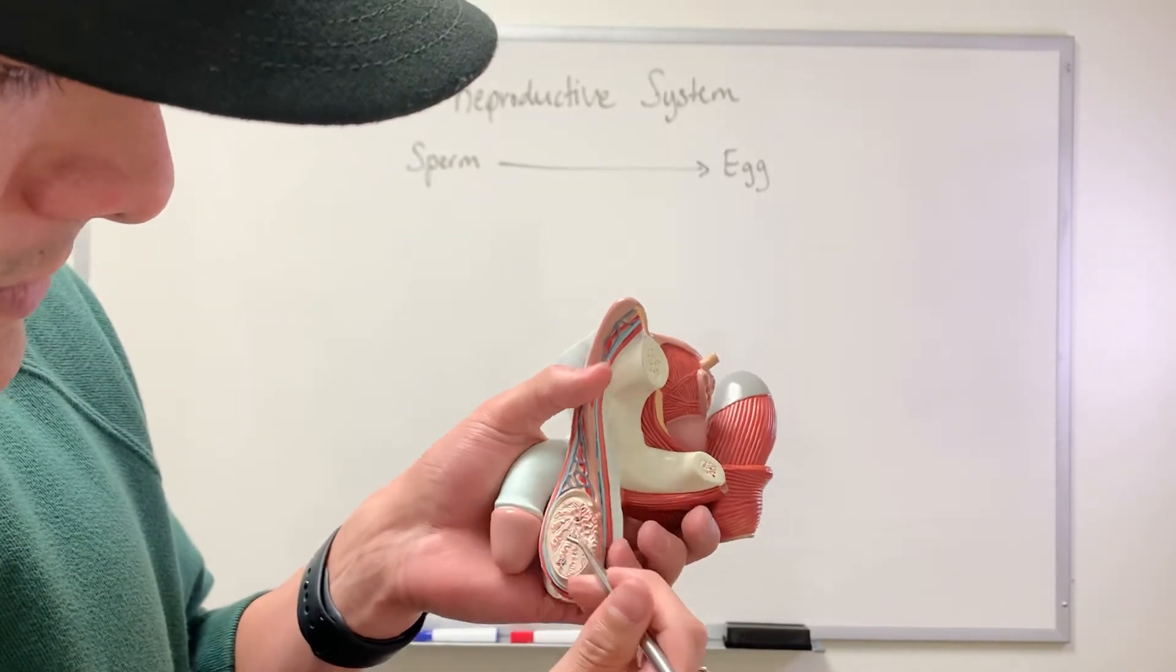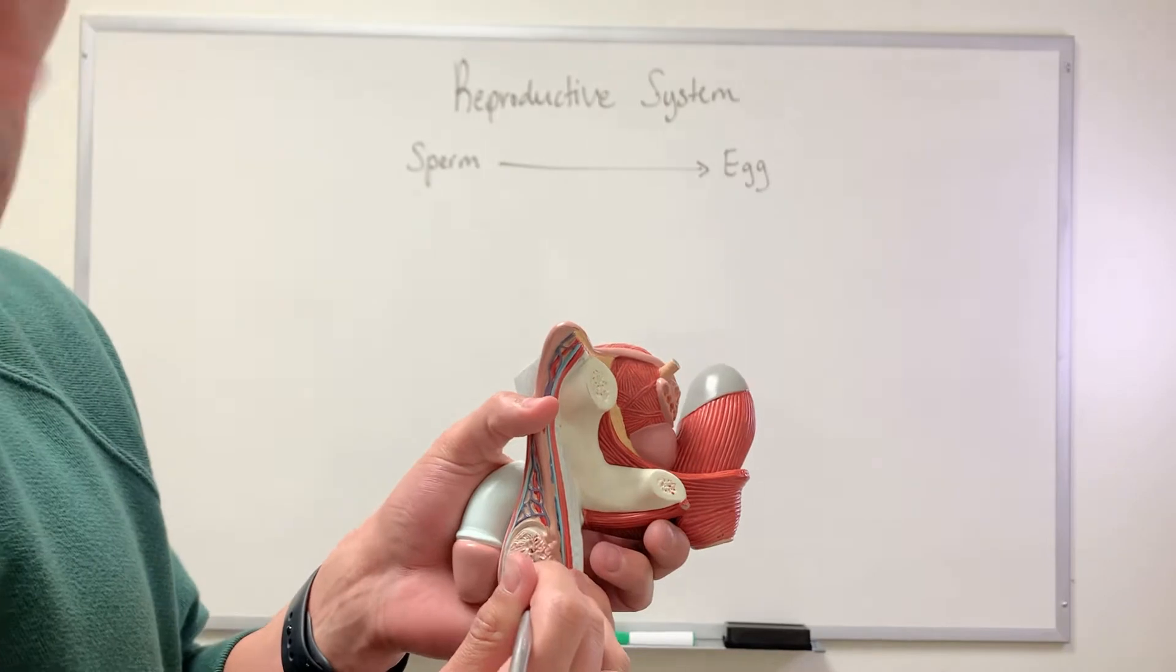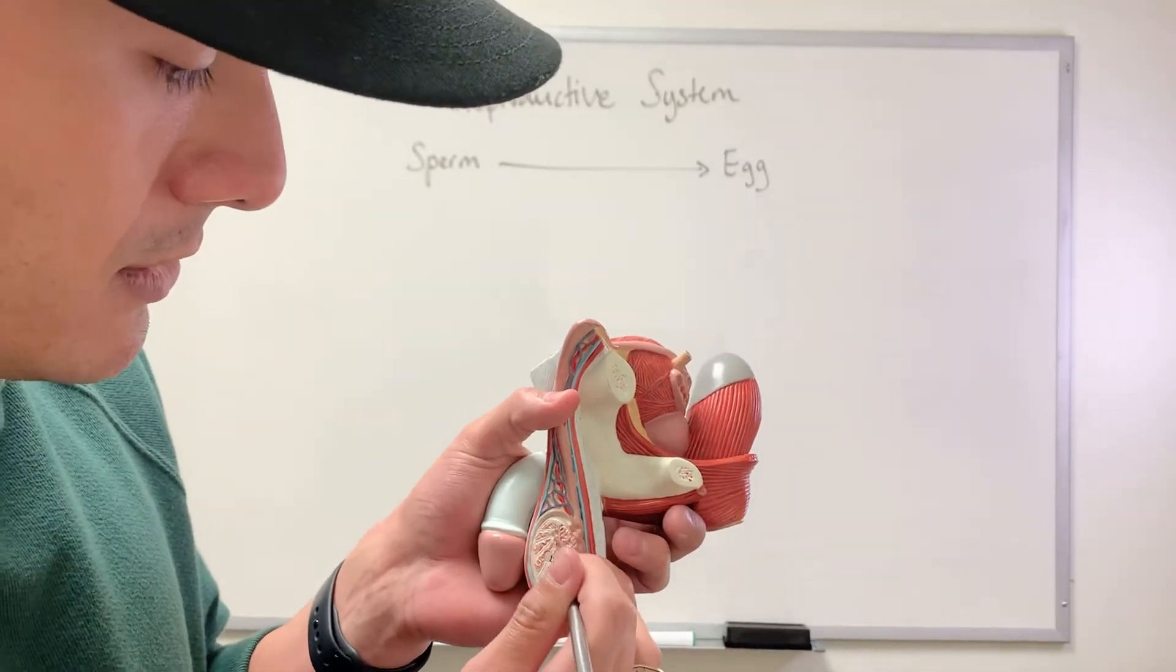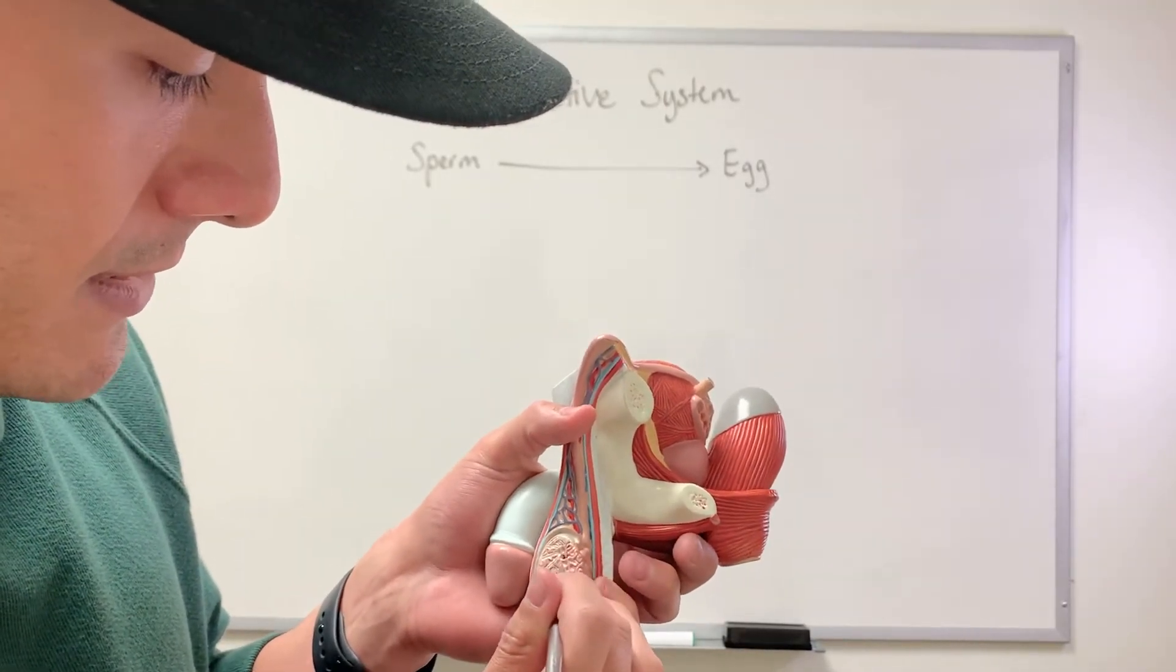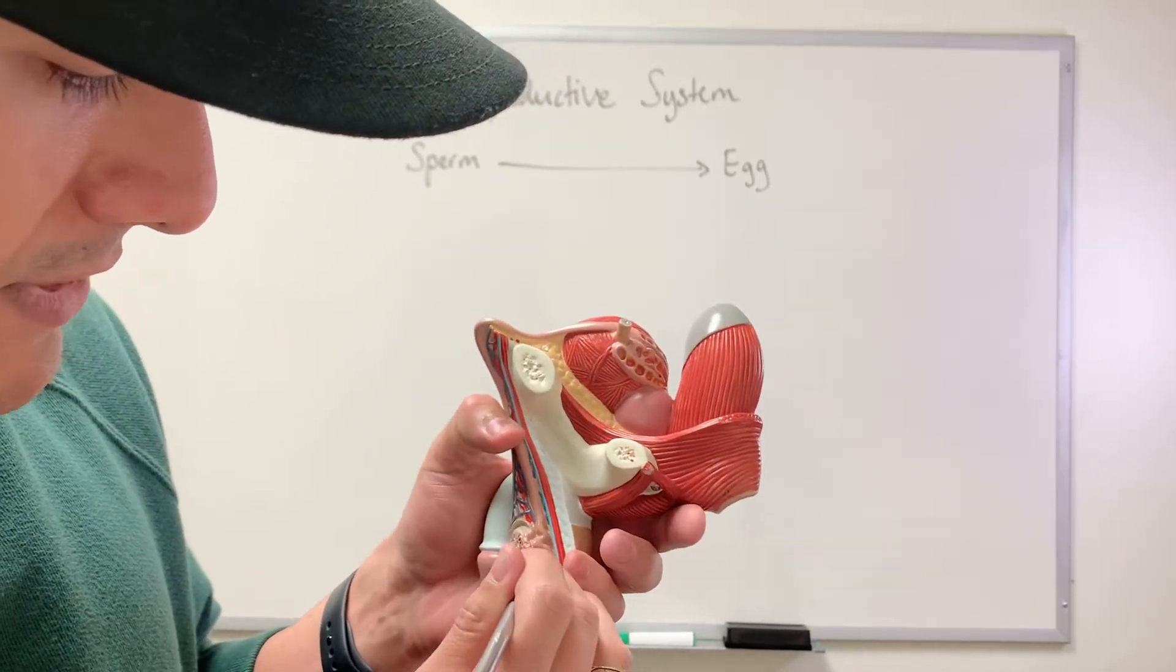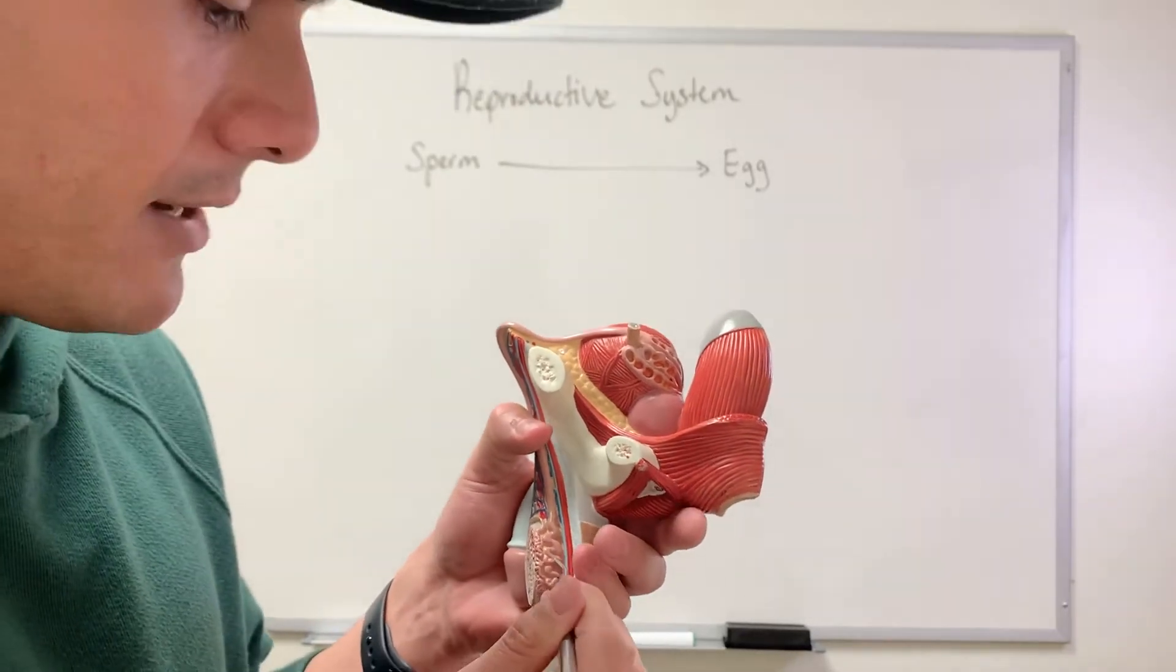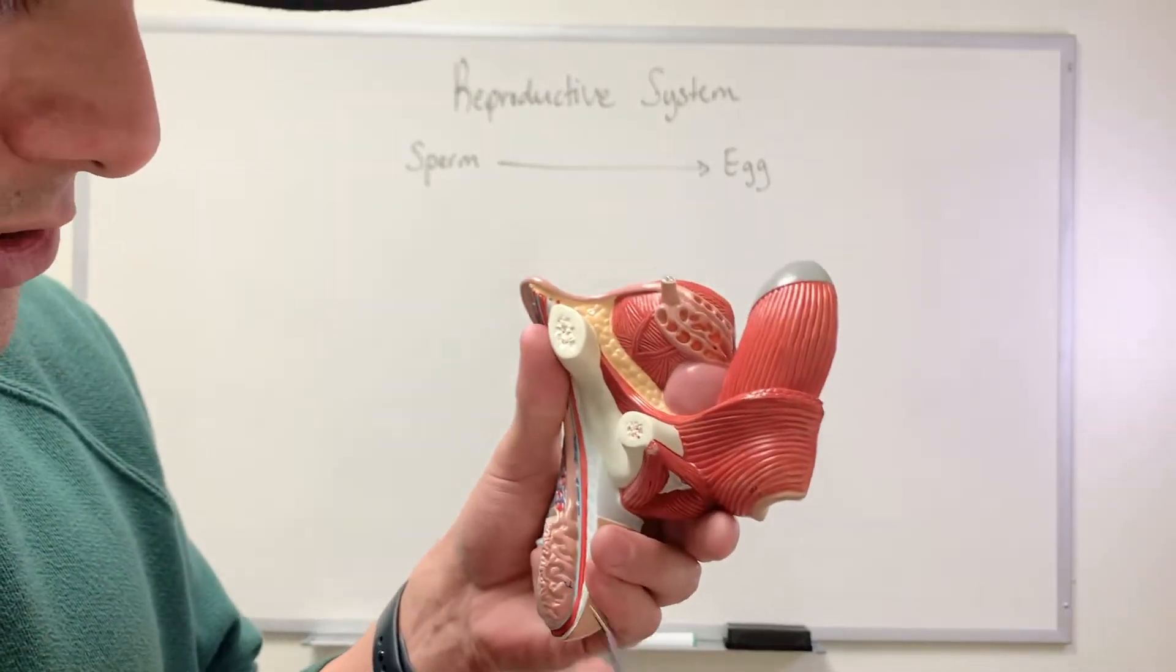So sperm is produced here in the seminiferous tubules and it gets transported to this region here. This is known as the rete testis. So once it gets to the rete testis, right, this is like the convergence of all these seminiferous tubules, you have this part. So this is known as the epididymis. The epididymis is the site for sperm maturation.